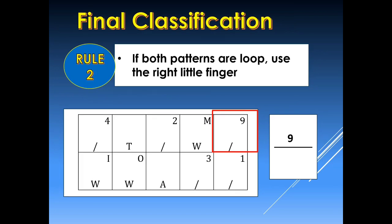The second rule in final classification is that if both fingers are loop patterns — either radial loop or ulnar loop — we are going to use the right little finger and place it in the numerator or above the classification line.